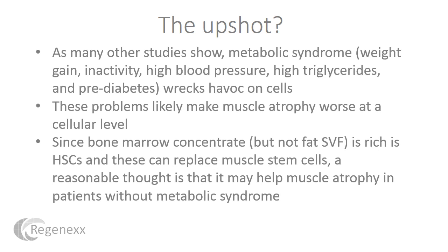What's interesting to think about is that since bone marrow concentrate, but not fat stem cells, is rich in hematopoietic stem cells — and these can replace muscle stem cells based on other research — it's not unreasonable to think that injections of bone marrow concentrate into the muscle could help muscle atrophy in patients without metabolic syndrome. Some research shows that if you inject bone marrow concentrate into healing rotator cuff muscles, you have half the retear rate after surgery. Could it be that what you're really doing is treating the muscle atrophy that allows so many patients to get retears and causes so many patients to be miserable for such a long time?